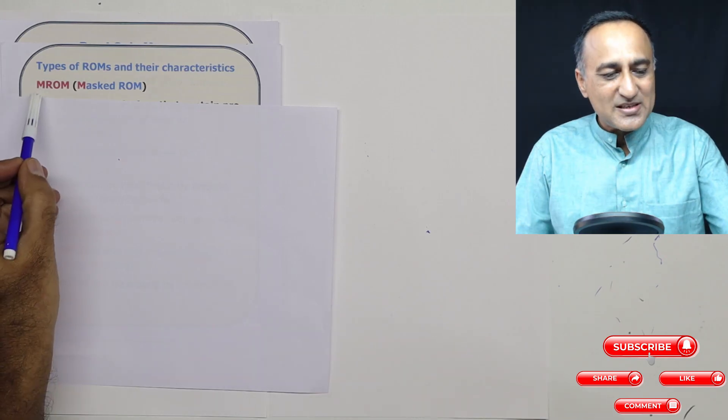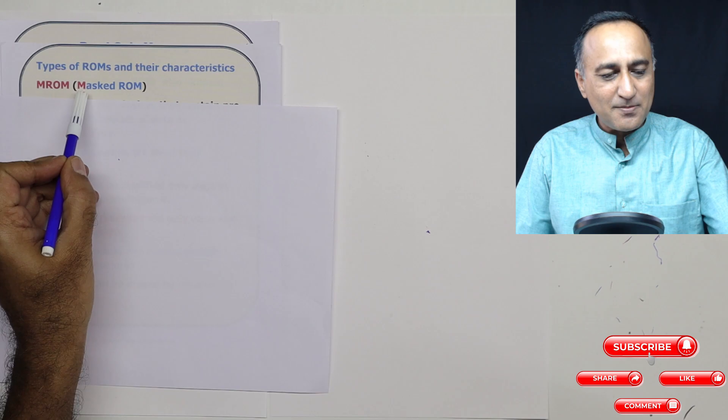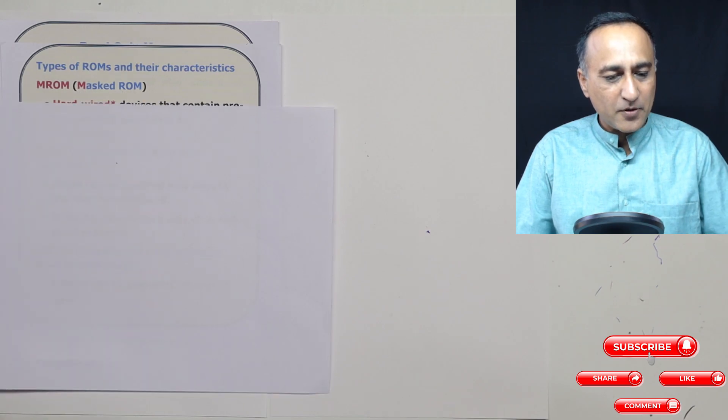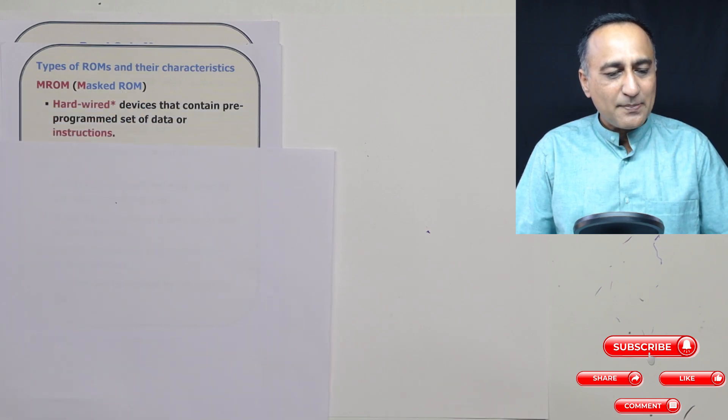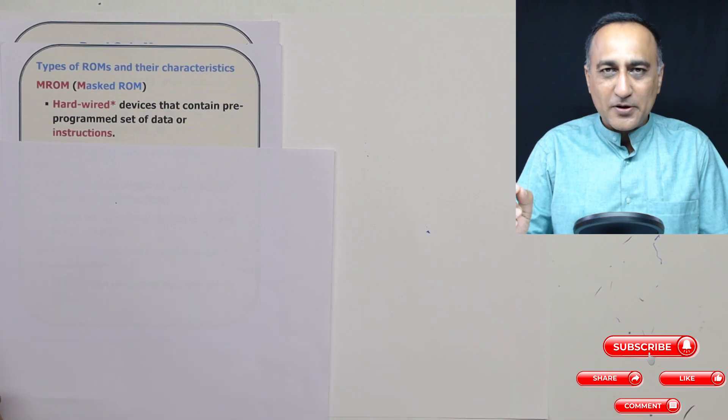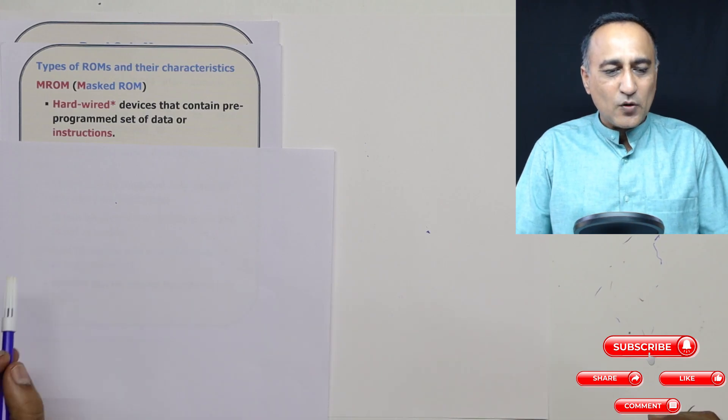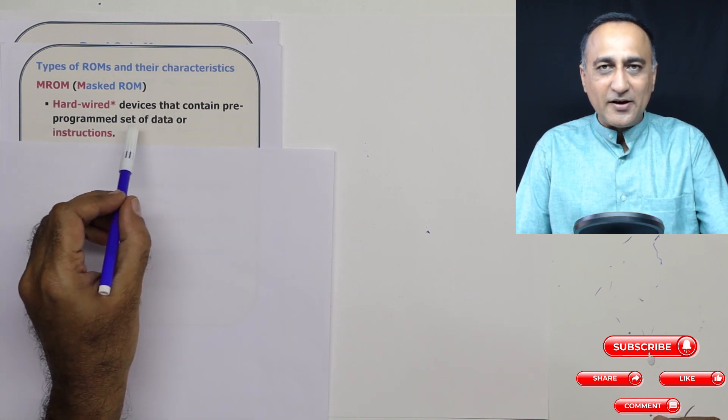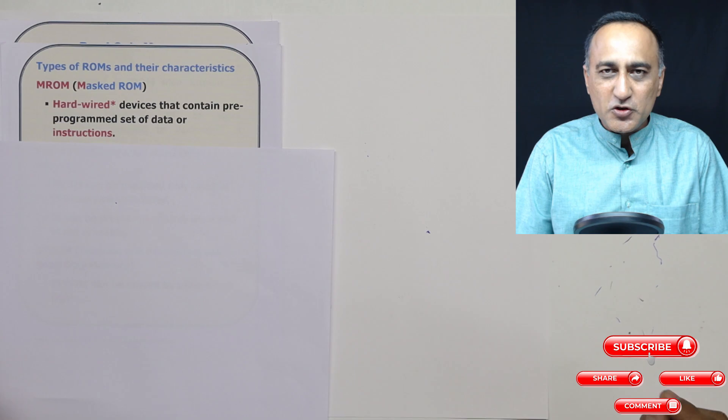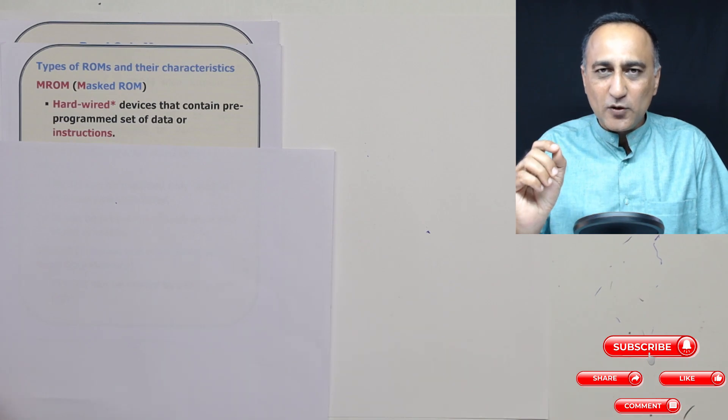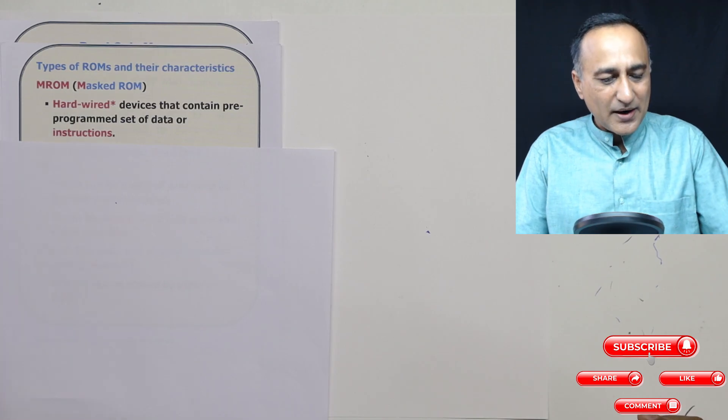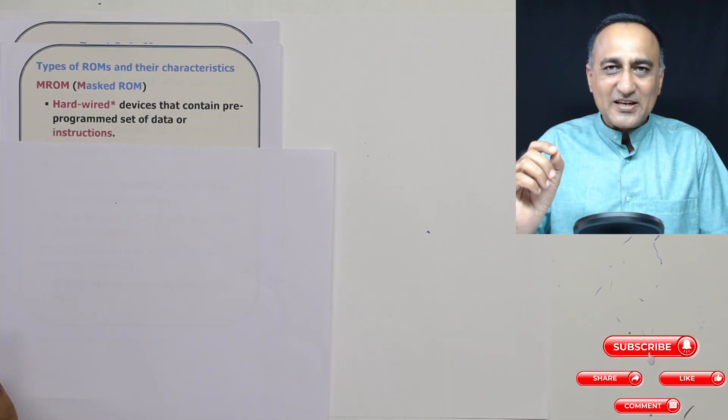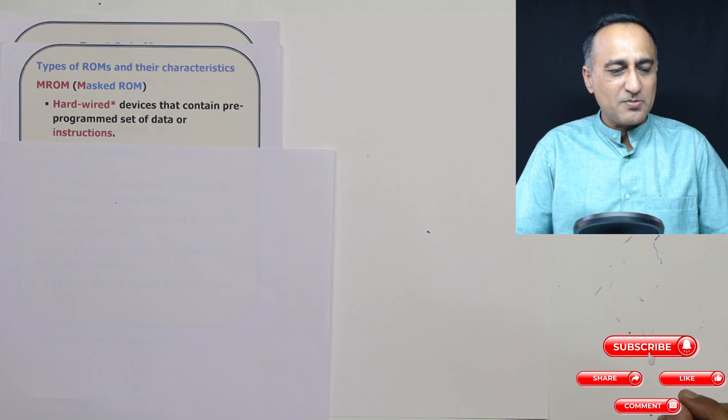The first type of ROM is the MROM, also known as masked read only memory. Here what happens is once it is produced in the factory, the code and data is written into that particular read only memory and you are not able to change it. So it allows you to write only once, you cannot change it. Hardwired means it is fixed, it is not changeable.